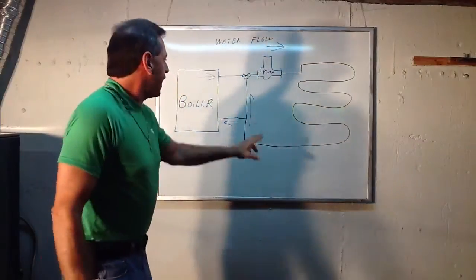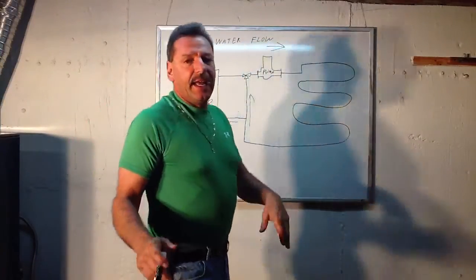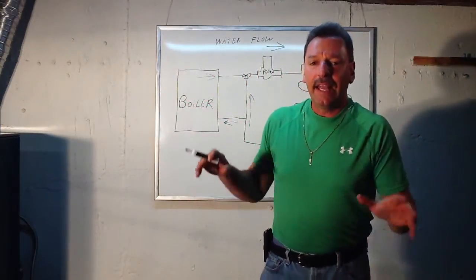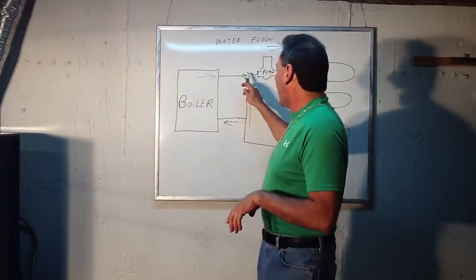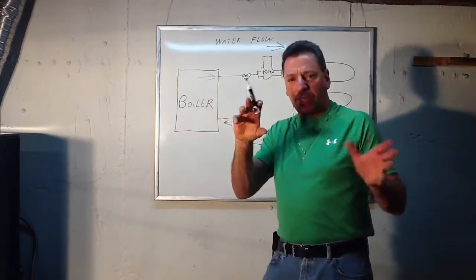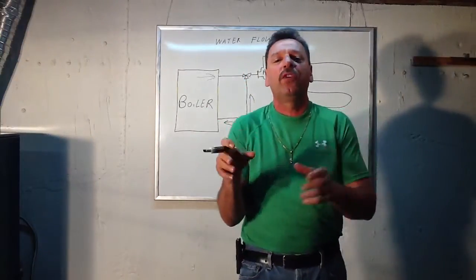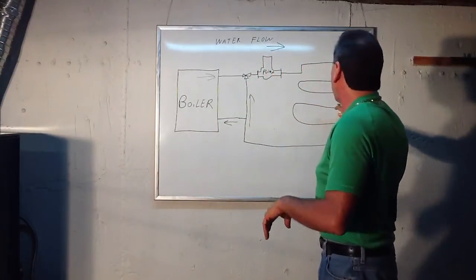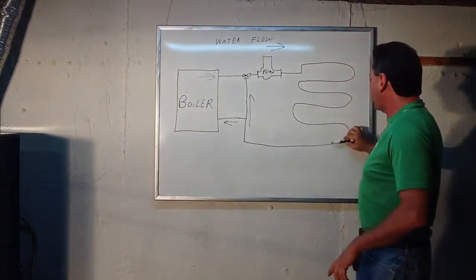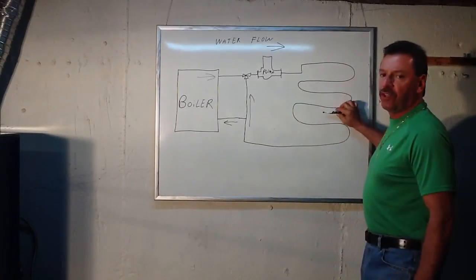So by having that mixing valve on there, it keeps the floor from getting too hot. It maintains the temperature, and there's a dial on this mixing valve that lets you put the temperature at 130, 135, 115, 120, whatever you want.